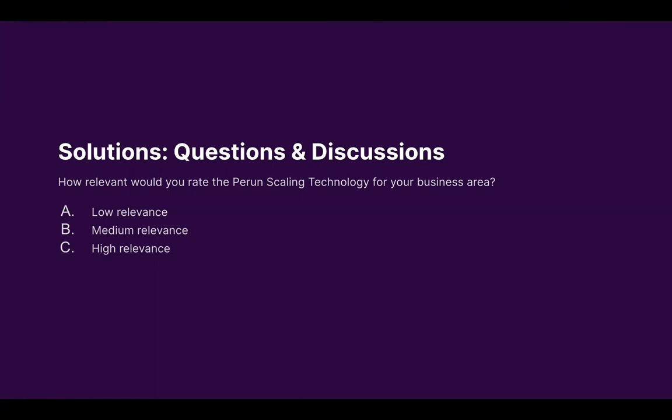Currently medium relevance is winning in the poll — between medium and high is what we're seeing. Scaling DeFi applications like Uniswap is definitely something we are also working on. How would this be relevant to other industries? We talked about IoT, but how do you imagine using Perun in supply chain or something else?